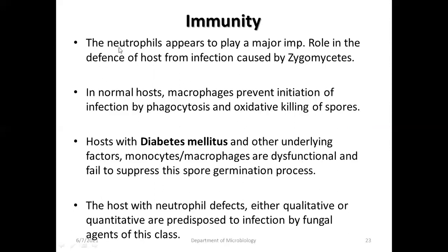Role of immunity: Neutrophils play a major role in defense against zygomycosis. In normal hosts, macrophages prevent initiation of infection by phagocytosis or oxidative killing. In hosts with diabetes and other underlying factors, monocytes and macrophages are dysfunctional and fail to suppress spore germination. Hosts with neutrophil defects, either qualitative or quantitative, are predisposed to infection by agents of this class.